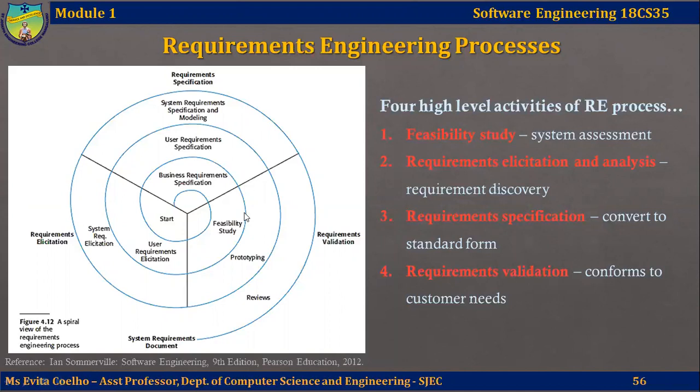Looking at the diagram on the left-hand side of the slide, you can see that the activities are organized as an iterative process around a spiral cycle, with the output being a systems requirements document. In the spiral view of the requirements engineering process, we start from the beginning with the business requirement specification. So what are business requirements?